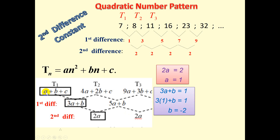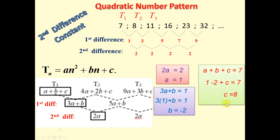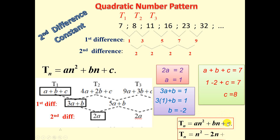To find C, we use the formula A + B + C = term 1. So 1 + (−2) + C = 7. That gives −1 + C = 7, so C = 8. We know the formula is Tn = An² + Bn + C, with A = 1, B = −2, C = 8, giving us Tn = n² − 2n + 8.